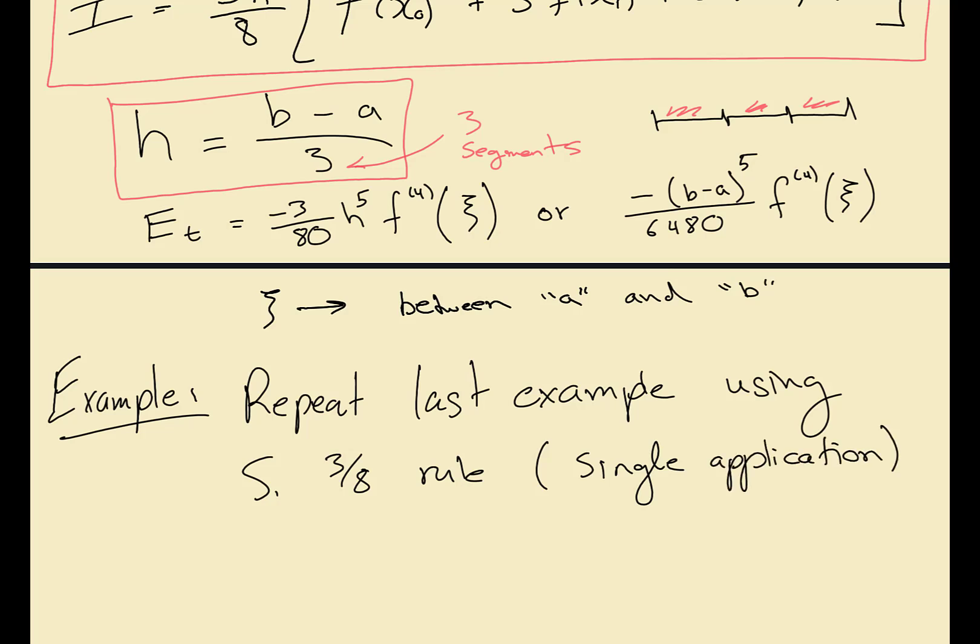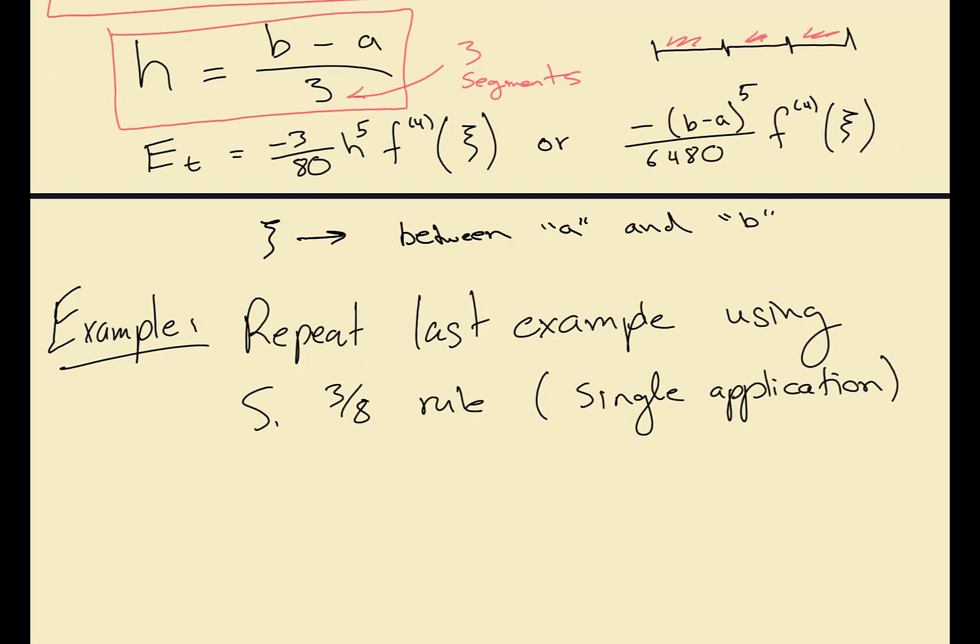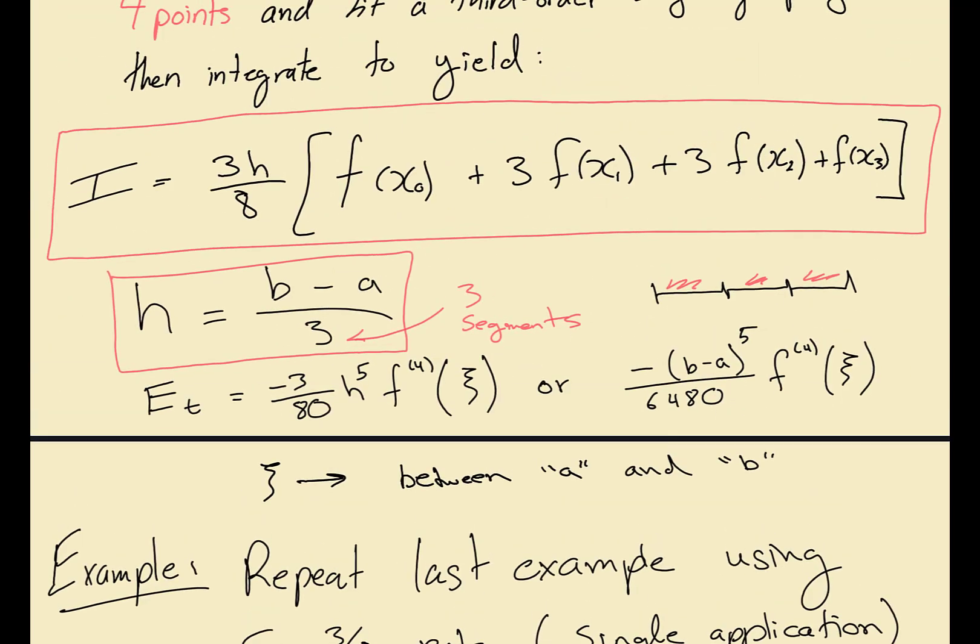If you remember last time we also did multiple applications for the one-third rule. That one will be a bit more accurate than this one because we had more segments in that one. Typically the one-third rule has two segments, if you do multiple applications and you have four segments, here we only have three segments.